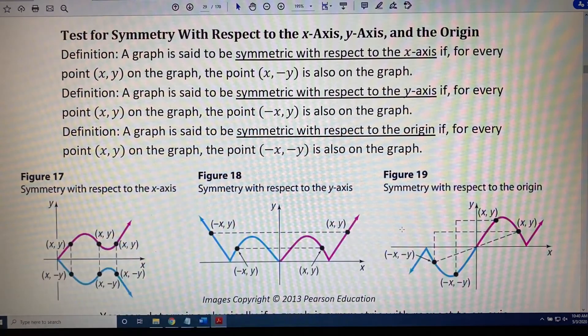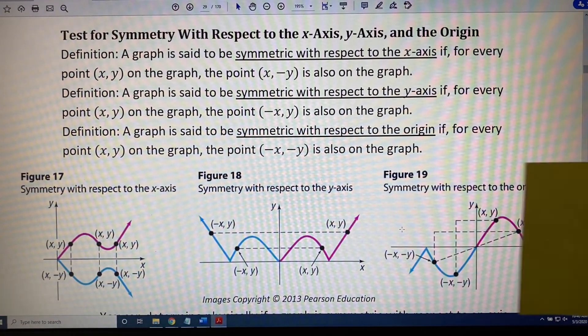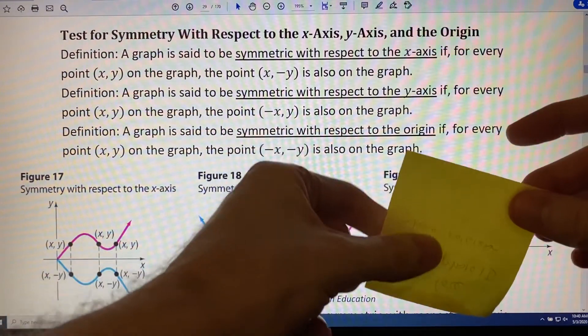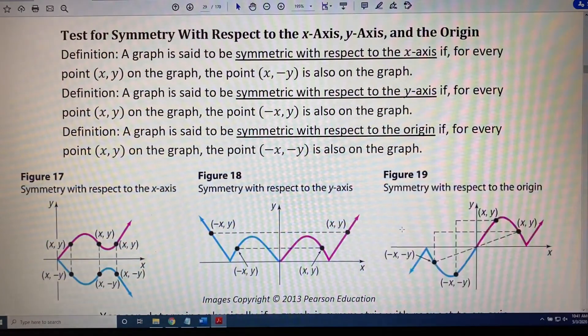And a graph that has origin symmetry has the property that when you take the graph and you spin it 180 degrees around the origin, you get the same picture before and after.